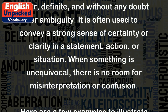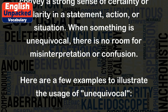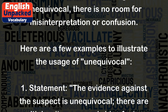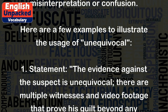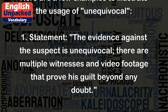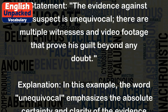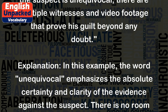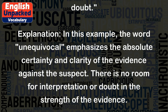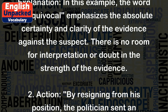When something is unequivocal, there is no room for misinterpretation or confusion. Example 1 — Statement: The evidence against the suspect is unequivocal. There are multiple witnesses and video footage that prove his guilt beyond any doubt. In this example, the word unequivocal emphasizes the absolute certainty and clarity of the evidence against the suspect. There is no room for interpretation or doubt in the strength of the evidence.